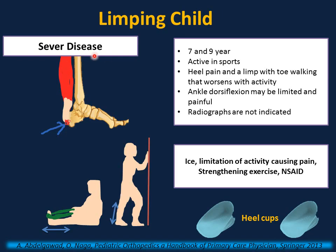Sever's disease is similar to Osgood-Schlatter disease and is also an overuse syndrome, but at a different location — repetitive traction of the Achilles tendon at the heel, causing calcaneal apophysitis or inflammation of the heel. It is commonly presented between 7 and 9 years of age, more common in males doing sports with running and jumping. They present with heel pain, a limp, and toe walking that worsens with activity and improves with rest. Ankle dorsiflexion will cause pain and be limited. Radiographs are not indicated unless the diagnosis is unclear and other causes such as tumor are considered. Treatment includes icing, limitation of pain-causing activity, stretching of the Achilles tendon, NSAIDs, and heel cups.